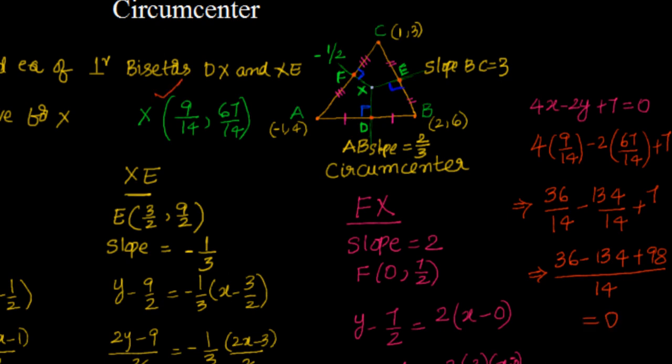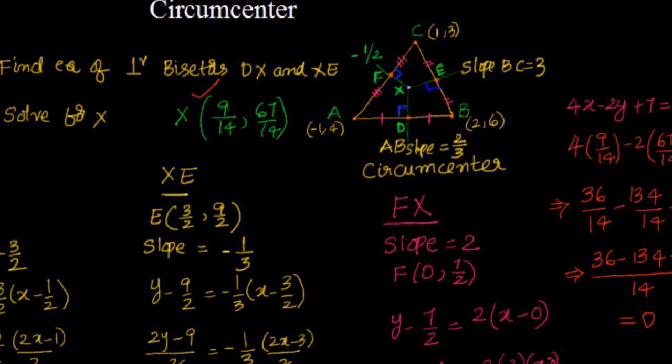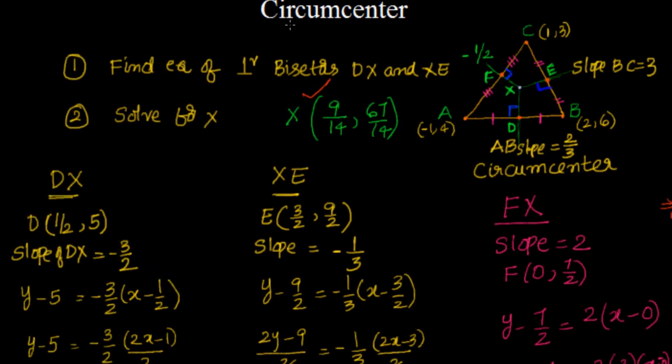That is how you find the circumcenter of a triangle. In the next video we will find the orthocenter, and after that we will prove that the centroid divides the segment between the orthocenter and circumcenter in a 2:1 ratio — using the same example. Thanks for watching. Bye for now.